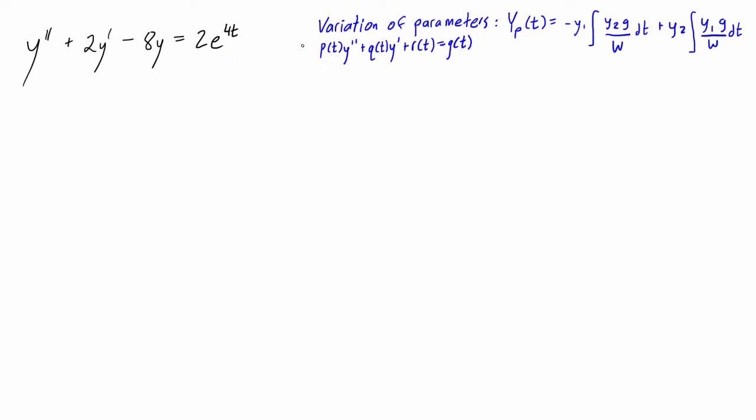But regardless, you can still use the variation of parameters. And so I just needed an example problem to work through, so we're going to do this one with this method anyways. And the last thing that we have in here is the W, that is the Wronskian, and it is actually the Wronskian of Y1 and Y2. So once we find those, we'll be able to basically plug everything in, crunch through these integrations, and then find the particular solution.